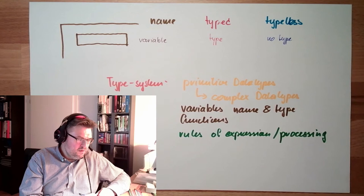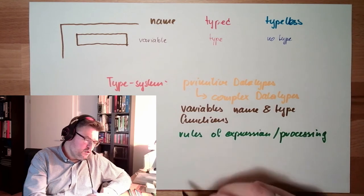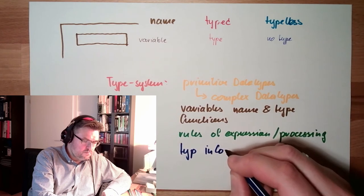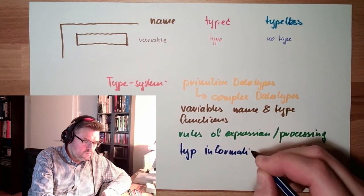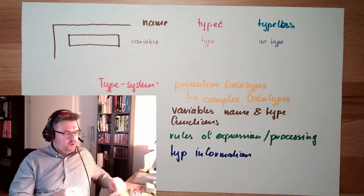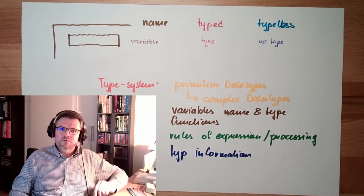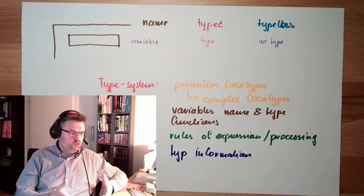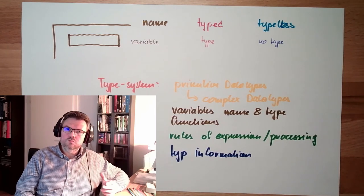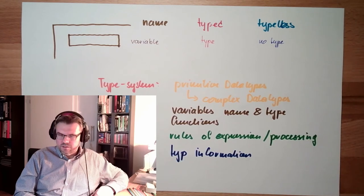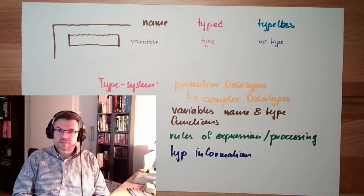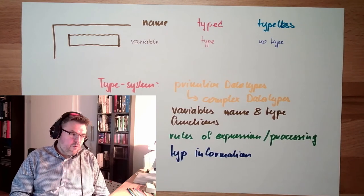Then there might be things like I have to find out what type this is. Type information might also be that there are certain programming commands where I can get the type of a variable - what is this, instance of, or something like this. This might sometimes be necessary.